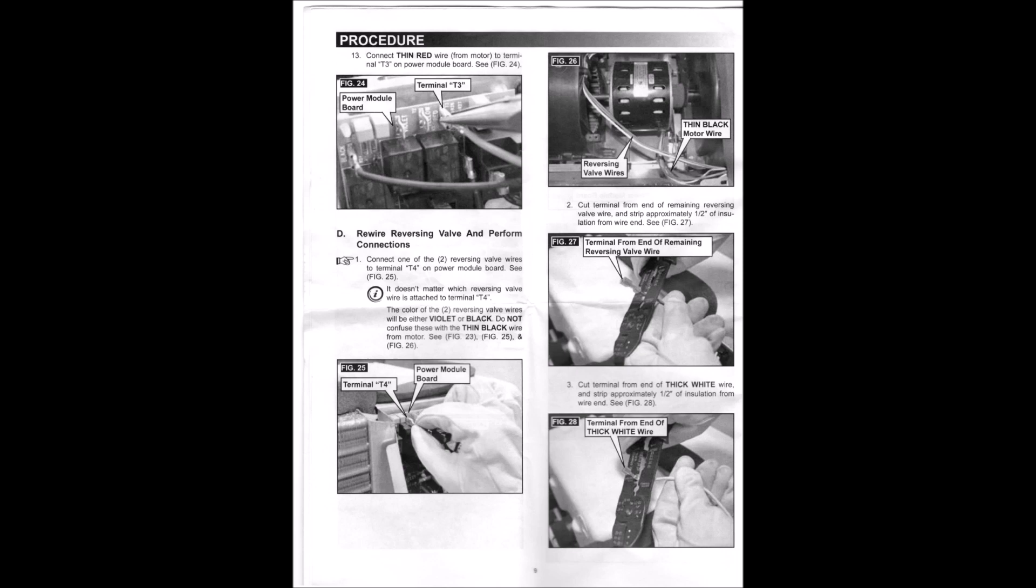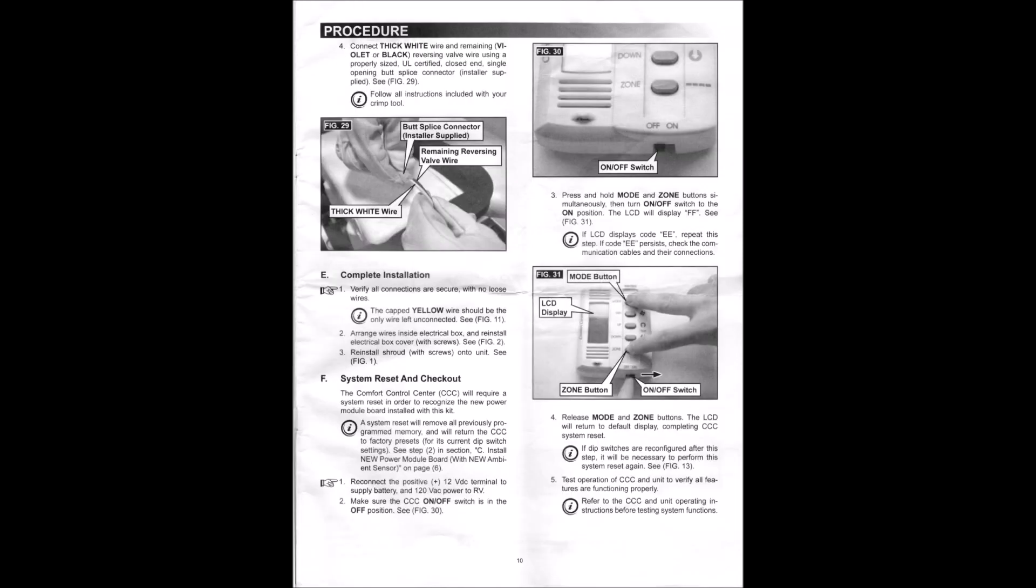So as you can see here, you're going to connect the thick white wire with whatever wire you had left. In our case it was a black one with a butt splice connector, just a wire cap. And you'll have one wire left that is capped. That's that yellow wire that's not used. Then you just arrange all the wires inside the electrical box and batten it up.